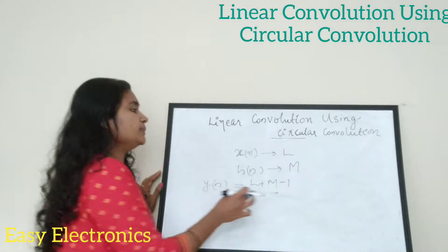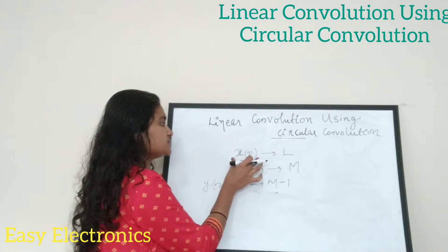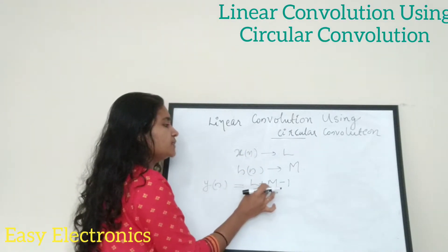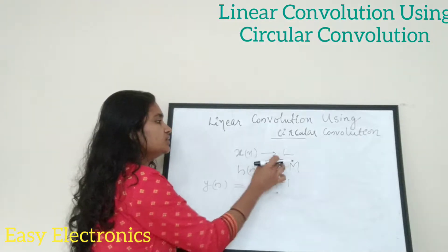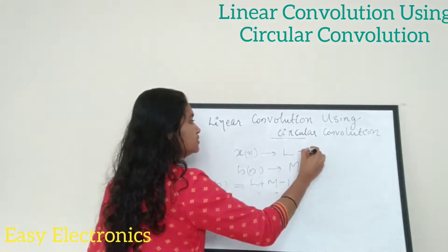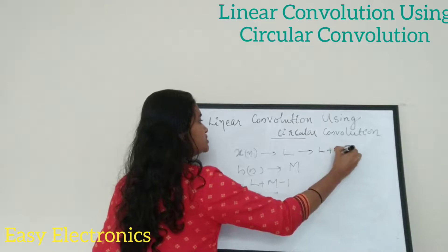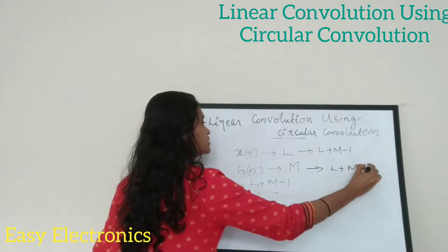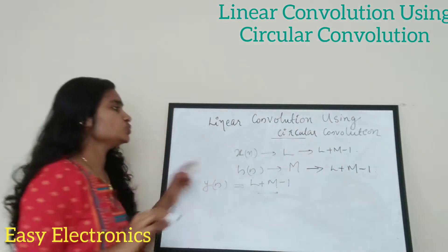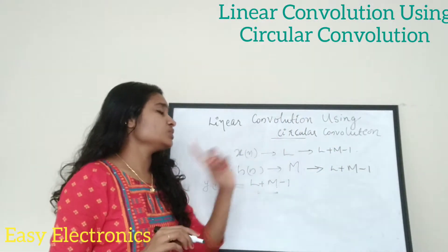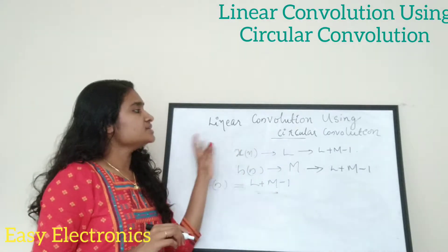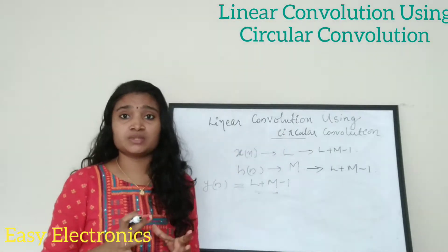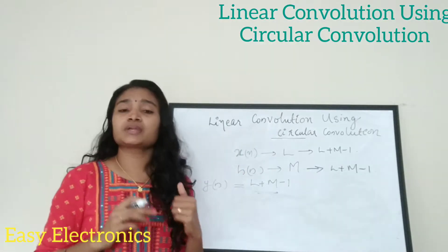So what we will do is make the length of the two sequences x of n and h of n equal to L plus m minus 1. We are going to change the length L to L plus m minus 1, and also the length m is changed to L plus m minus 1. This is what you have to do before performing the circular convolution. Then simply you can take the circular convolution by applying the matrix method and you can find the linear convolution.